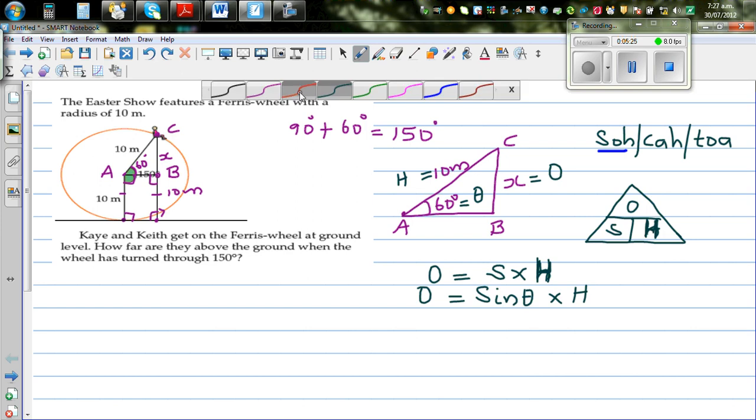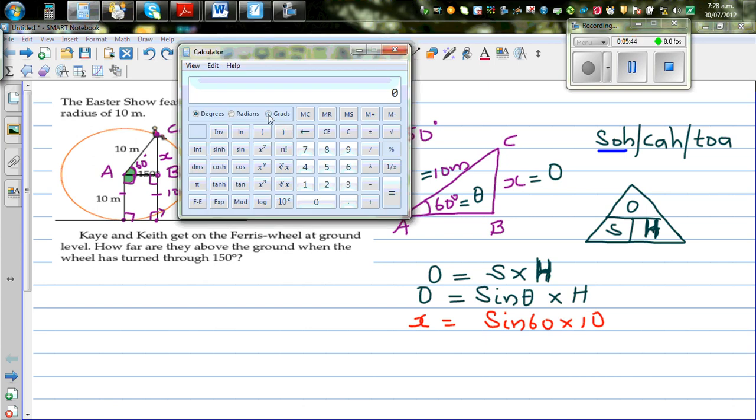So now let me substitute what is O. O is, O is X is equal to sine 60. Sine 60 times your hypotenuse, which is 10. And now you use your calculator. So let me get my calculator. So I will set this in degrees. It's already in degrees. So I will go 60.